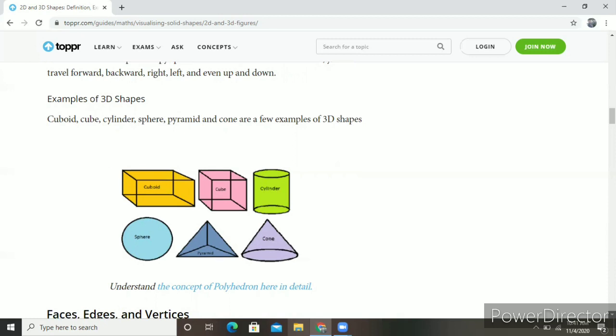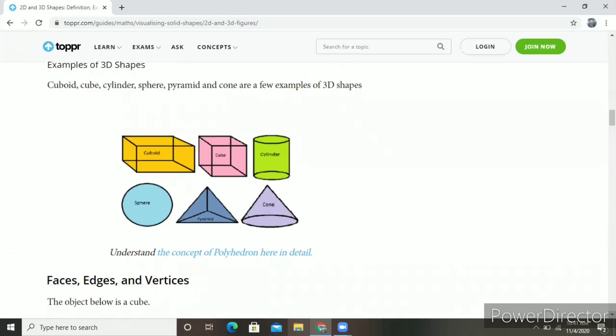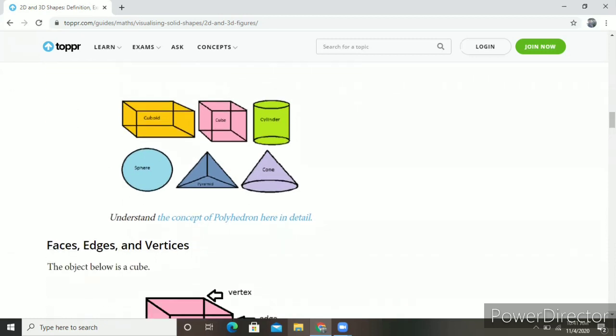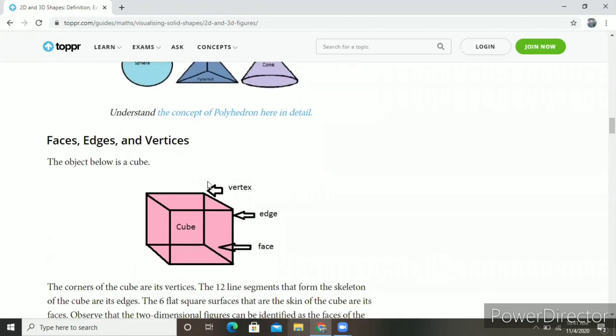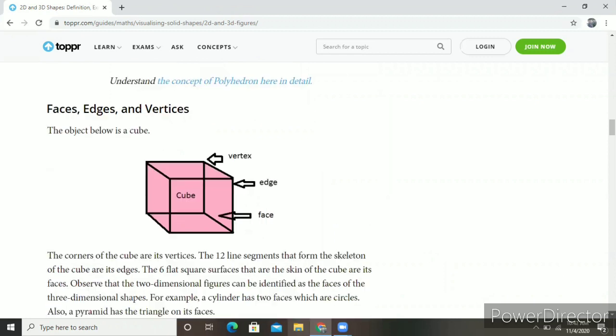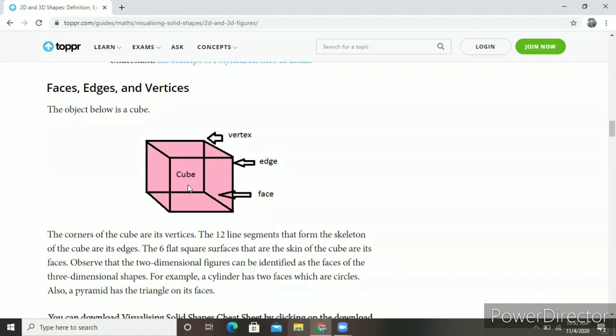Now, after 2D and 3D shapes, let's read about face, edge, and vertex. What difference is in face, vertex, and edge? You will find the 3D objects have face, vertex, and edge. This is a cube shape.